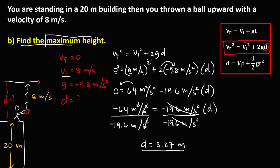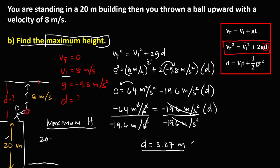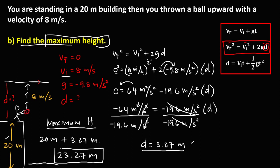To find the maximum height from the ground, we add the building height and the displacement upward: 20 meters + 3.27 meters = 23.27 meters. Therefore, the maximum height is 23.27 meters.